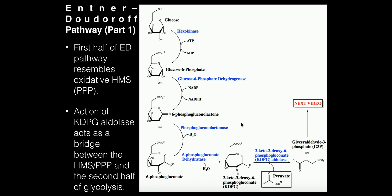In this video we're going to discuss the Entner-Doudoroff pathway. In the vast majority of eukaryotic organisms, the default pathway for sugar metabolism — glucose metabolism — is glycolysis. In fact, in any biochemistry course you take, probably the first metabolic pathway you're going to look at is glycolysis.